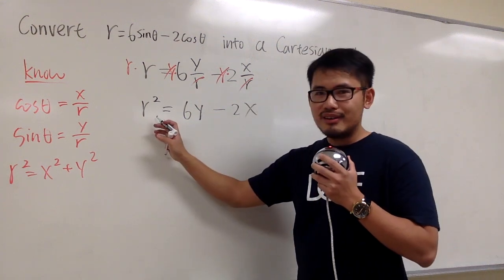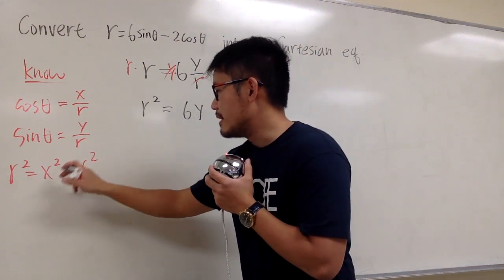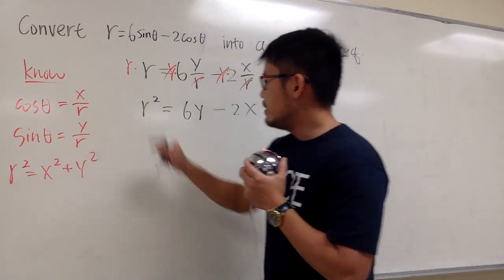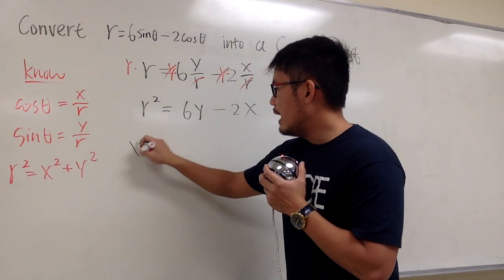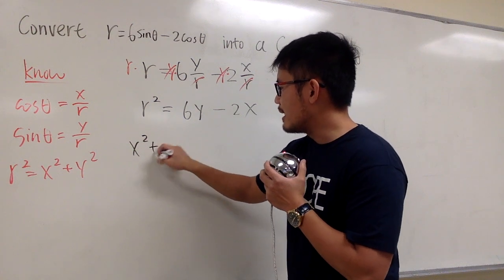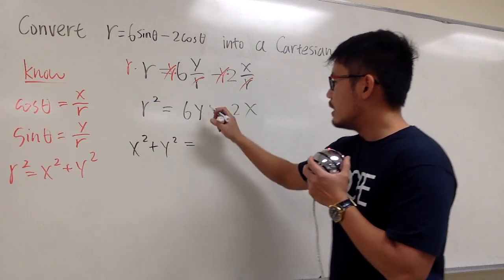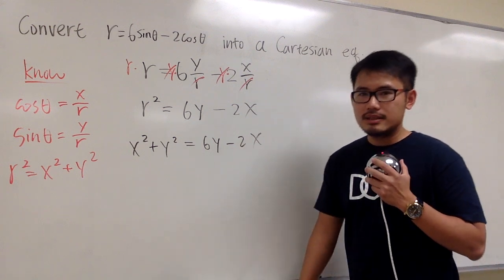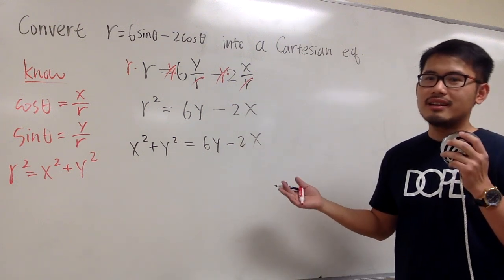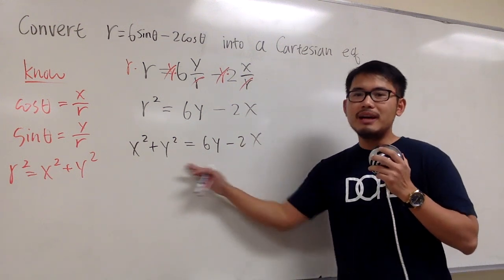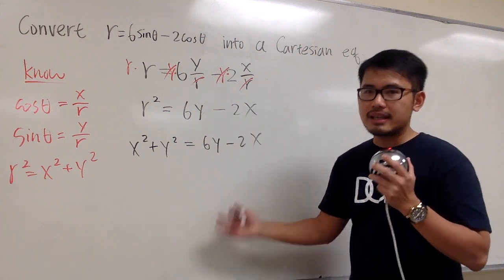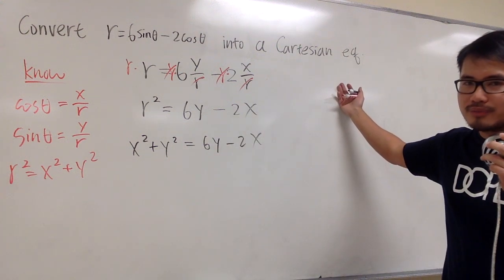And then what's r squared? We know r squared is the same as x squared plus y squared. So I can plug this in here. This is going to be x squared plus y squared equals to 6y minus 2x. And technically, we are done. But we can do better. Because I cannot really describe how does this equation look like in the Cartesian equation world.